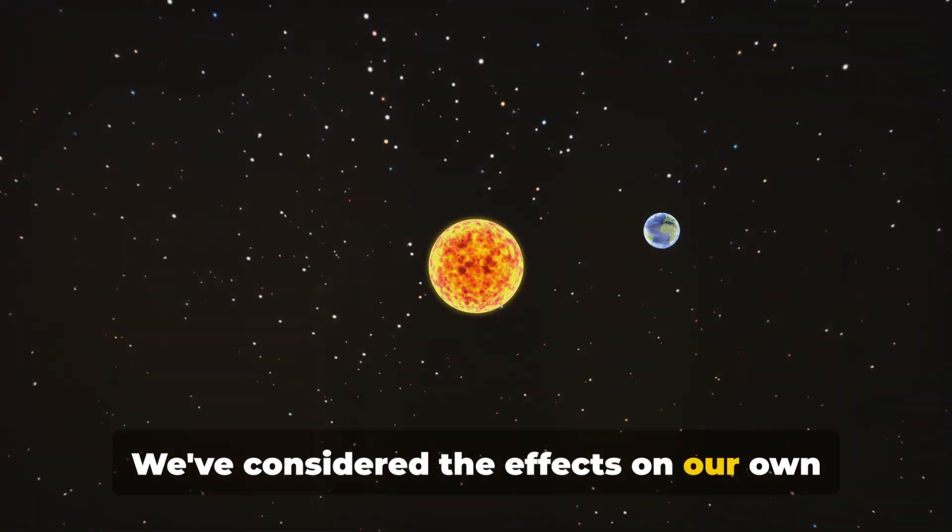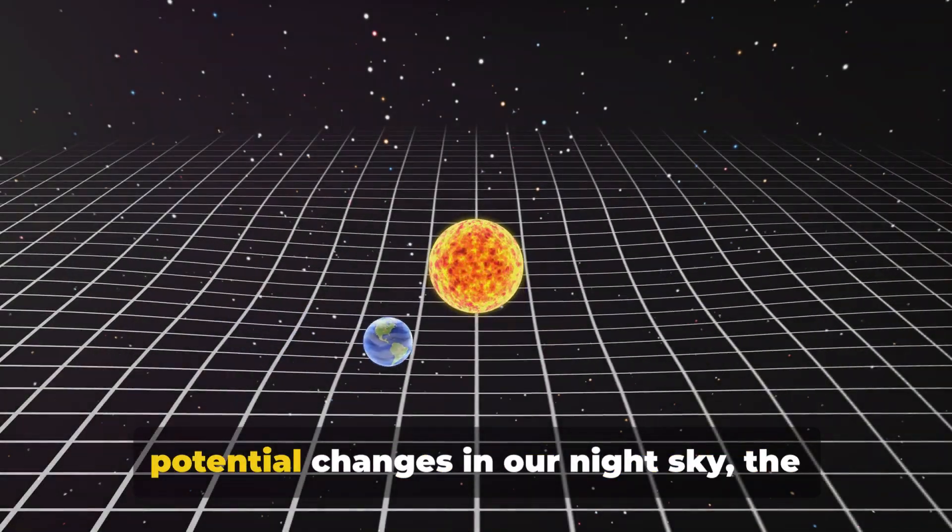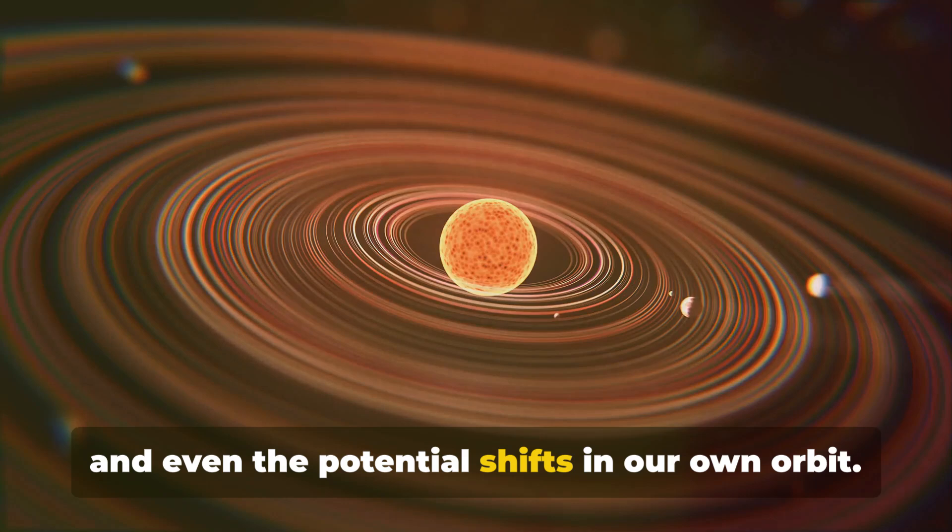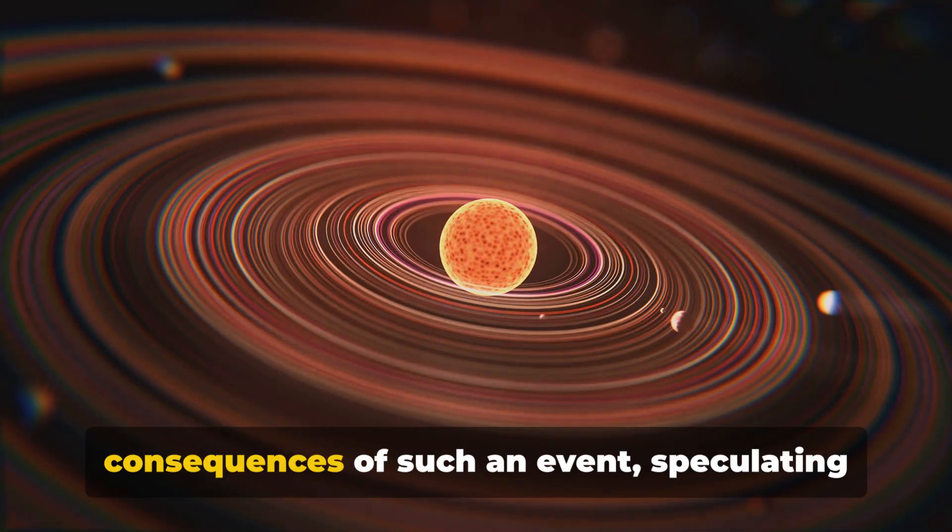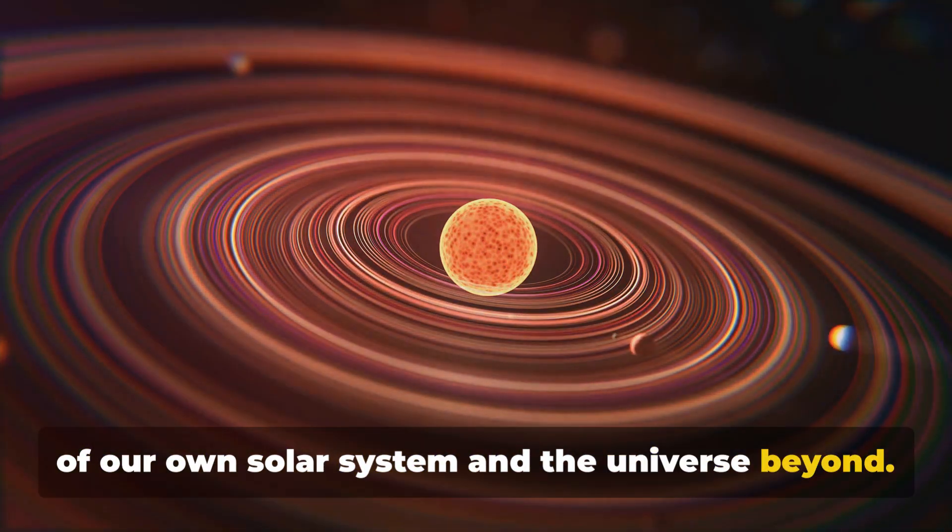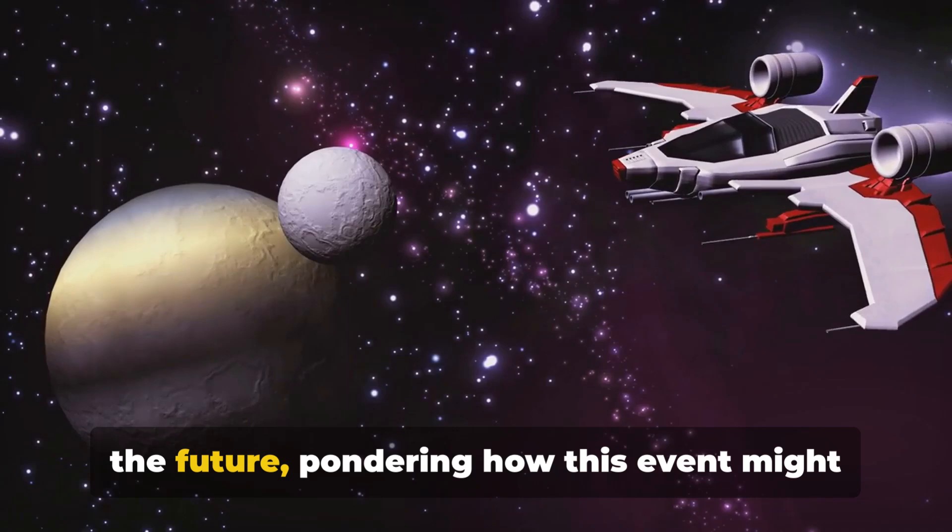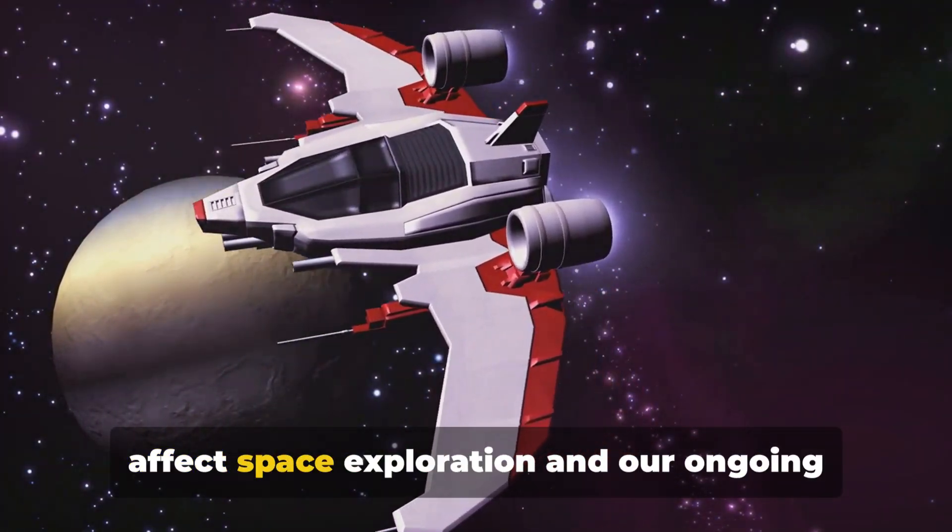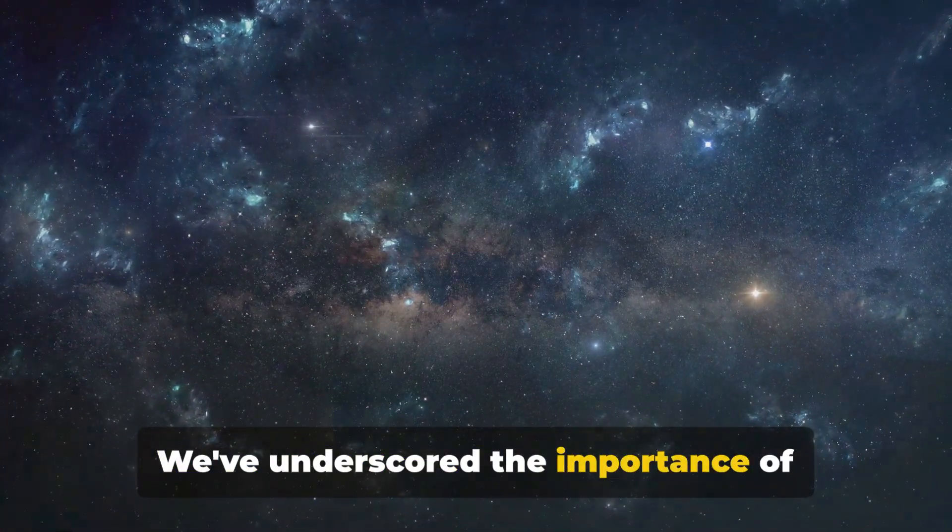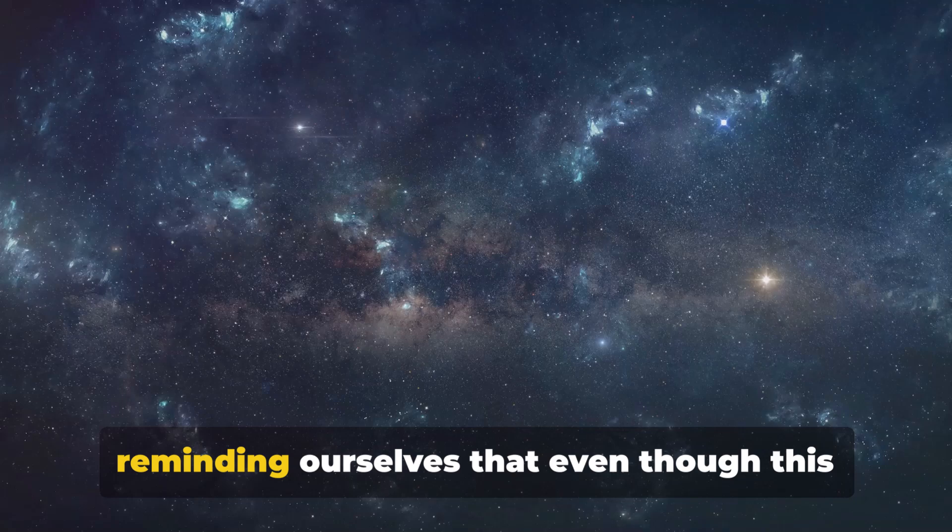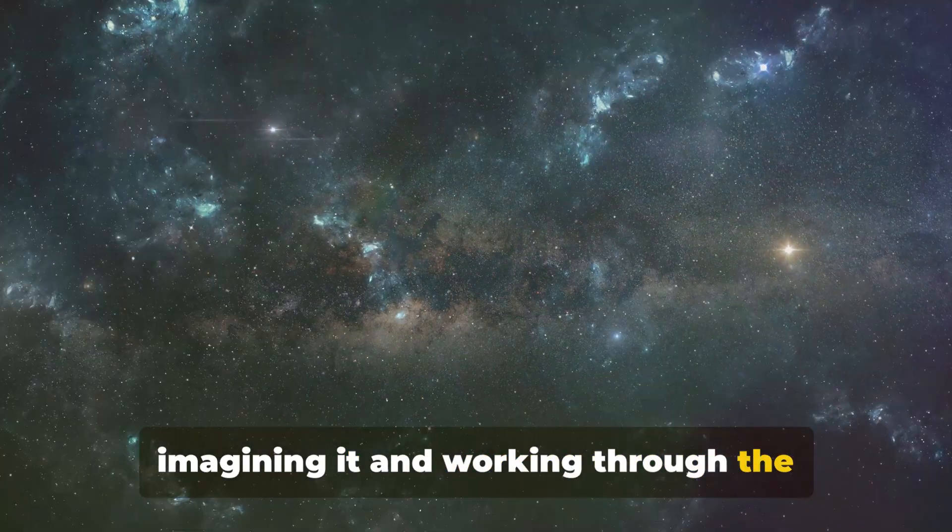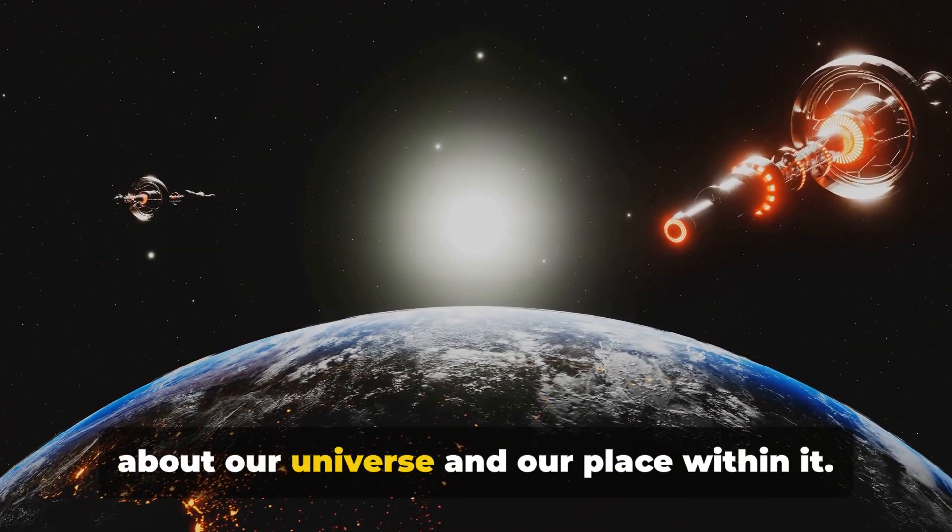We've considered the effects on our own planet, Earth, hypothesizing about the potential changes in our night sky, the possible meteor showers from the debris, and even the potential shifts in our own orbit. We've looked at the long-term consequences of such an event, speculating on how it might reshape our understanding of our own solar system and the universe beyond. And finally, we've taken a glimpse into the future, pondering how this event might affect space exploration and our ongoing quest to understand the universe. We've underscored the importance of scientific curiosity and exploration, reminding ourselves that even though this scenario is highly unlikely, the act of imagining it and working through the potential outcomes helps us learn more about our universe and our place within it.